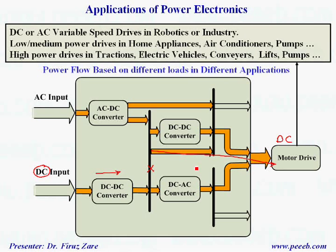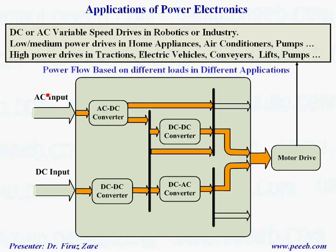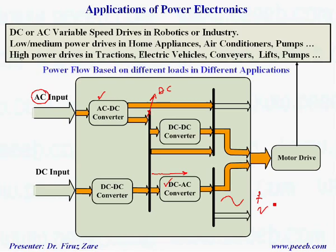And if we have a DC voltage source and need to provide enough voltage for a DC drive system, we can change the voltage level, regulate the voltage, and send it directly to the DC drive system. Now let's concentrate on the AC drive system. For an AC drive system, if the input is AC, then through this diode rectifier we get DC voltage, and through this DC-AC converter we can control the frequency and magnitude suitable for the AC drive system.